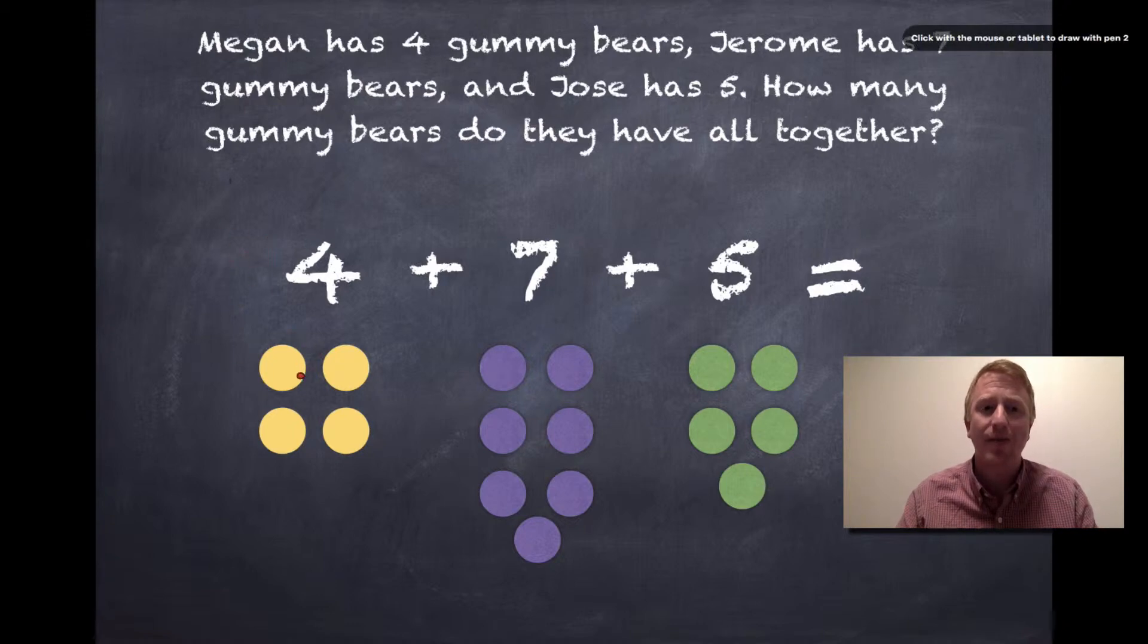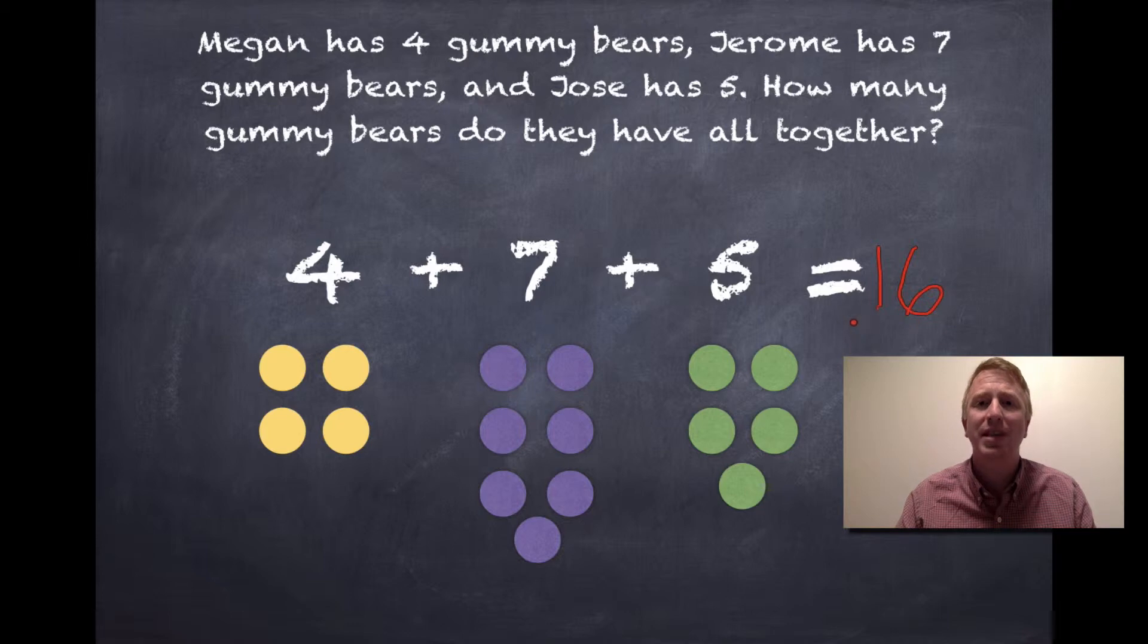Now, if I was to add these together, I have one, two, three, four, five, six, seven, eight, nine, ten, eleven, twelve, thirteen, fourteen, fifteen, sixteen. My answer to this problem would be sixteen.